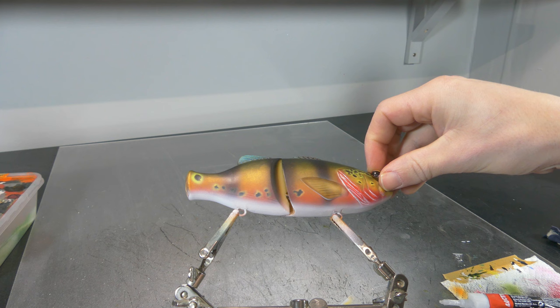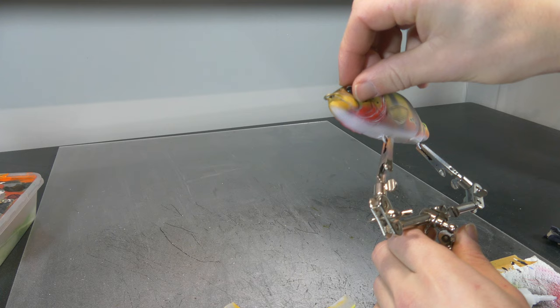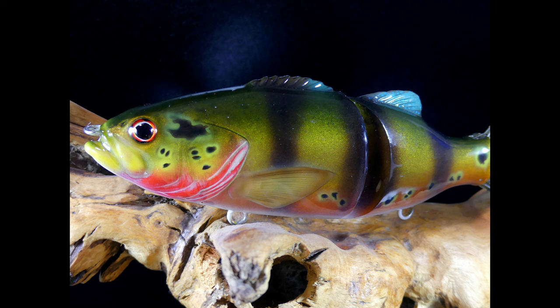Now it's time to put the eyes in. I'm using these realistic glass eyes from lure blanks and these really color match perfectly with the eyes of a peacock bass. Ready for a clear coat.